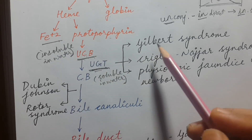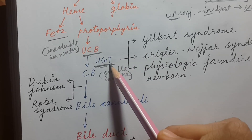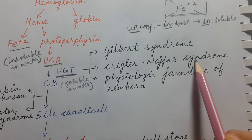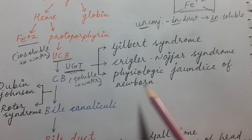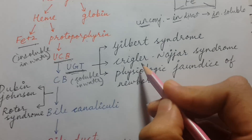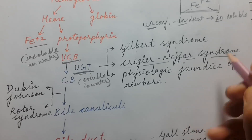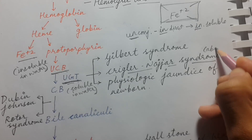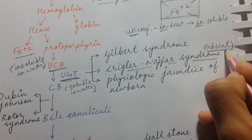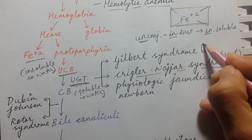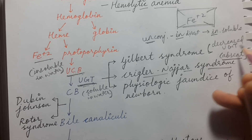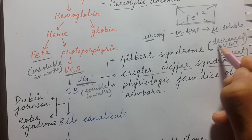The three causes of jaundice which are due to a problem in uridine glucuronosyl transferase are Gilbert syndrome, Crigler-Najjar syndrome, and physiologic jaundice of the newborn. The most dangerous is Crigler-Najjar syndrome, because in this there is complete absence of UGT. While in Gilbert syndrome we have a decreased amount of UGT, and normally these patients are asymptomatic.